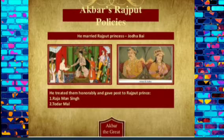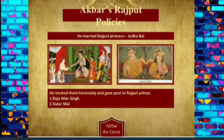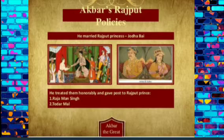Now we come to the traditions of succession. The Mughals did not believe in the rule of primogeniture, where the eldest son inherited his father's estate. Instead, they followed the Mughal and Timurid custom of coparcenary inheritance — a division of the inheritance amongst all the sons. That was their main rule of succession.